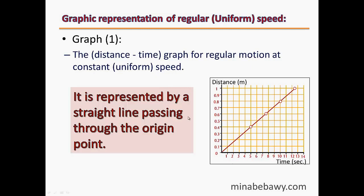To describe this graph, we can say that it is represented by a straight line passing through the point of origin. It is represented by a straight line because the object is moving with constant or uniform speed.